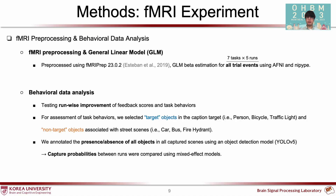We estimated beta values for all trial event tasks for the multivariate analysis. We deliberately designed the paradigm to be difficult, so it is important to test whether the feedback scores and task behaviors actually improved. To quantify task behaviors, we annotated target and non-target objects in every scene and quantified run-wise capture probability changes.